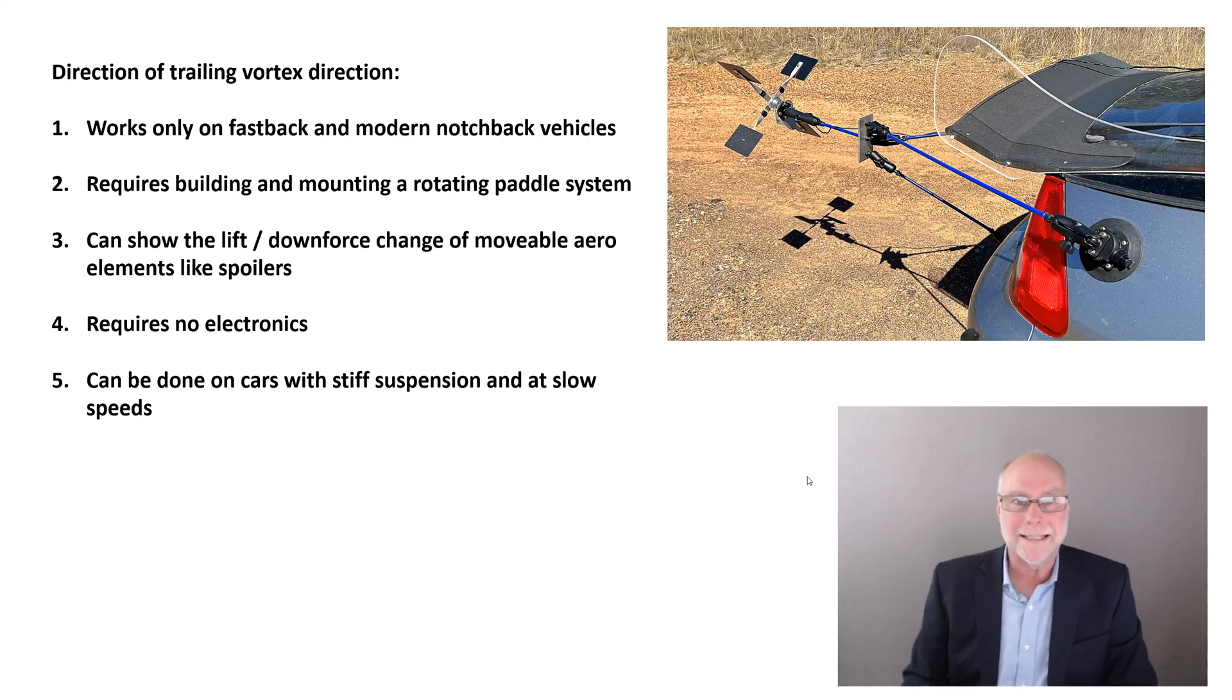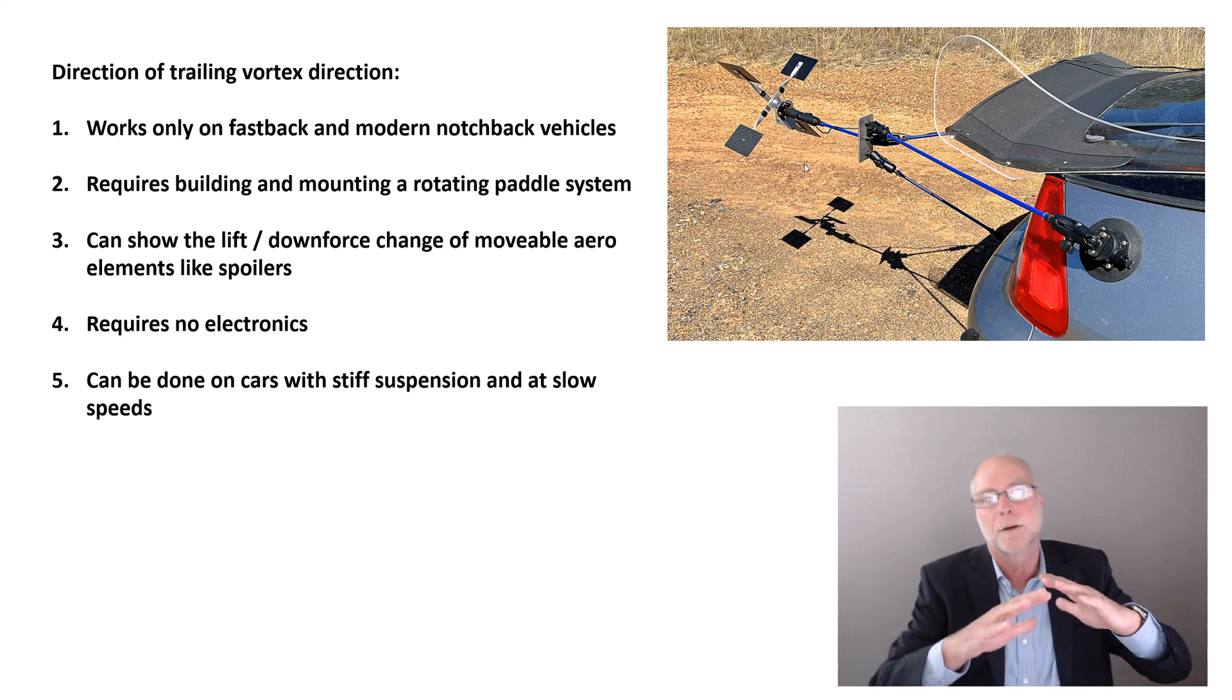Trailing vortices. Measuring the direction of swirls coming off the back of fastback or notchback vehicles. Here's an example of the paddle system that I built to measure the action of trailing vortices. It works only on those cars, fastbacks and modern notchbacks. You need to have a nice sloping tail to the vehicle and that's the sort of shape that develops these trailing vortices.